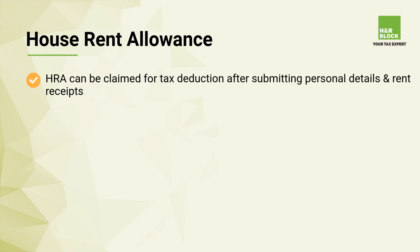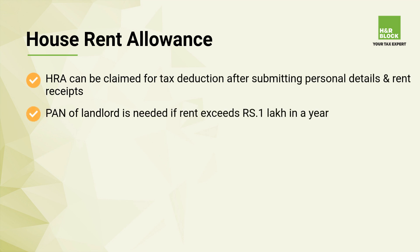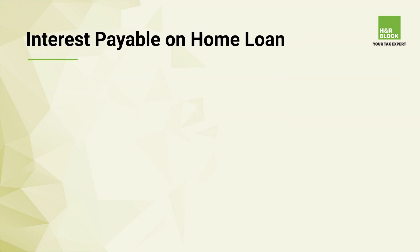HRA — House Rent Allowance. Tax exemption can be claimed on HRA by providing details like the name and address of the landlord and proof of actual rent paid. If the rent paid exceeds rupees one lakh, then the PAN of the landlord is to be provided.